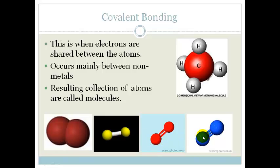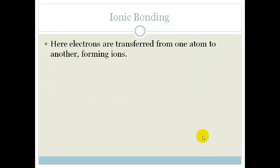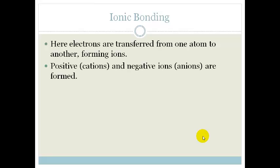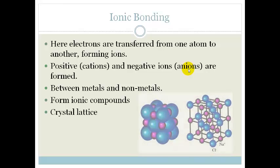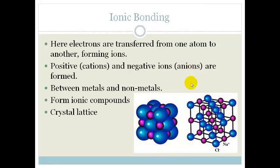Ionic bonding, the electrons are transferred from one atom to another forming ions. You've got positive ions which are called cations and negative ions which are called anions. This occurs between metals and nonmetals. So obviously they form ionic compounds. And remember that when you've got ionic compounds you get a crystal lattice. This is a typical example of sodium chloride drawn in two different ways. Here's your ball and stick model and this is your space filler model.